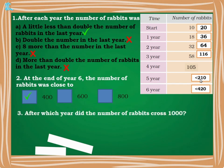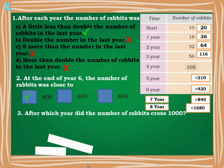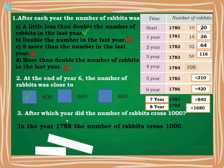After which year did the number of rabbits cross 1000? Continuing: year 7 is less than double of 420, so less than 840. Year 8 is less than double of 840, which is 1680 — so we cross 1000 in year 8. The starting year was 1780, so year 8 is 1788. The answer is: in the year 1788, the number of rabbits crossed 1000.